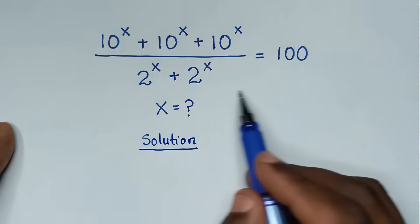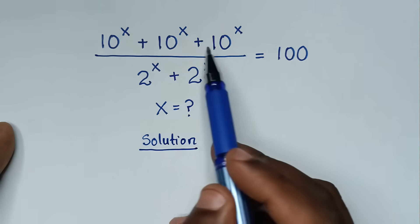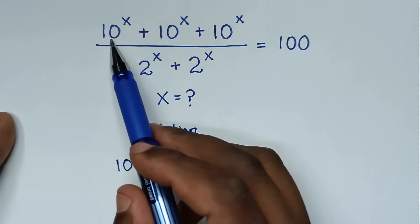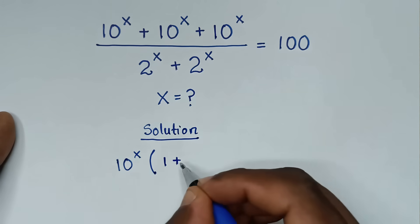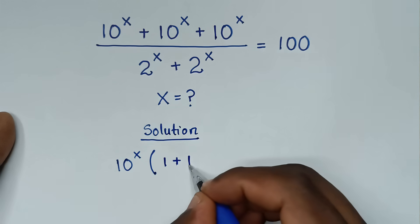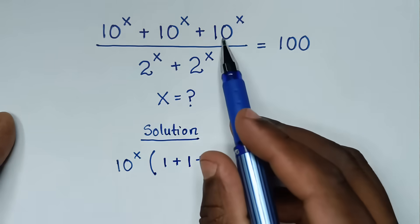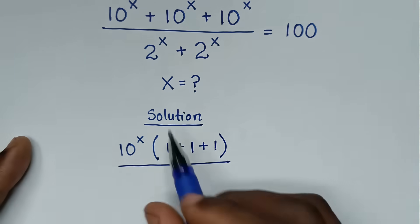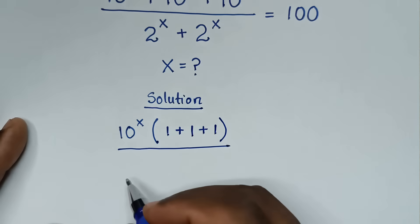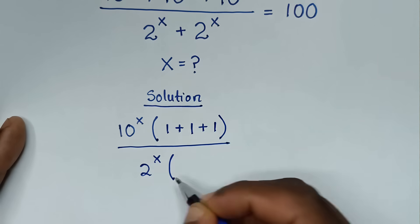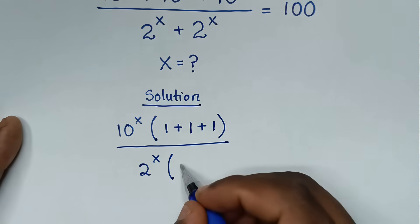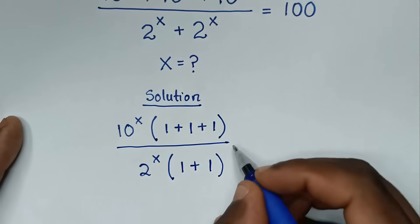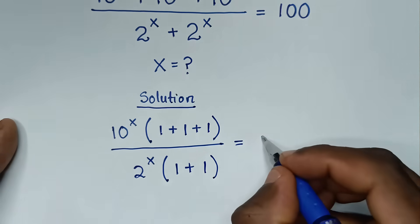From this problem, in the numerator, 10 power x is common, so we'll take out 10 power x out of bracket. Then 10 power x divided by 10 power x is 1, plus 1, plus 1, bracket. And in the denominator, 2 power x is common, so we'll take out 2 power x out of bracket. Then 2 power x divided by 2 power x is 1, plus 1, bracket, is equal to 100.